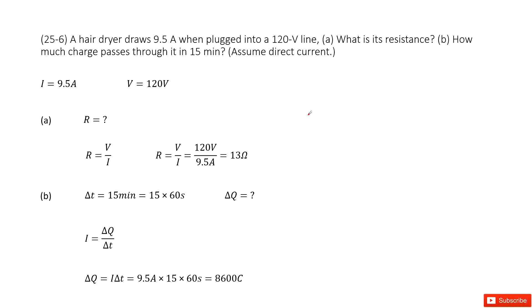There you can see we have a hair dryer. The current is given as 9.5 amps and the voltage is given as 120 volts.